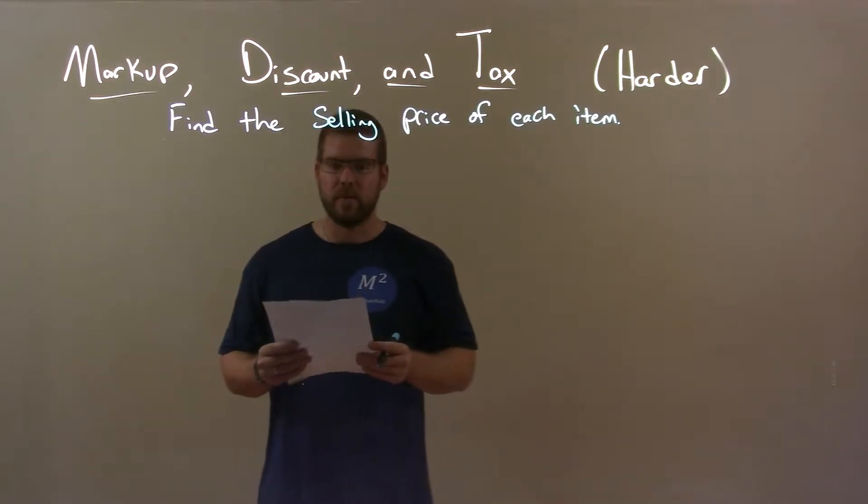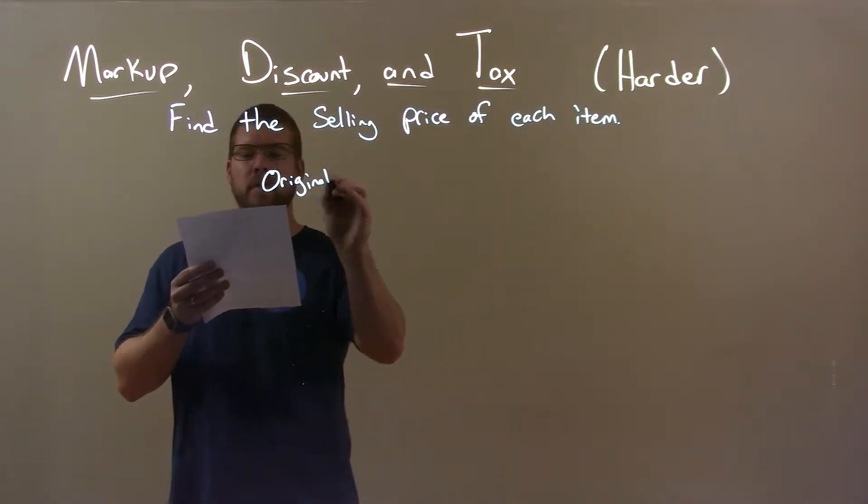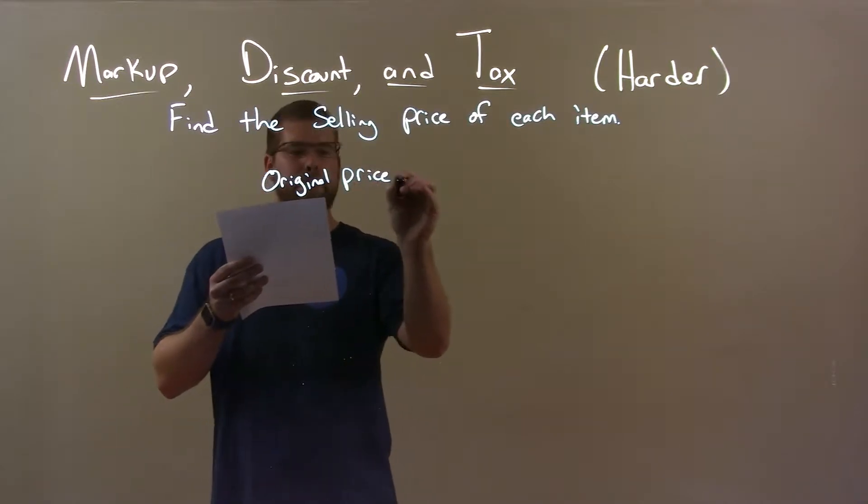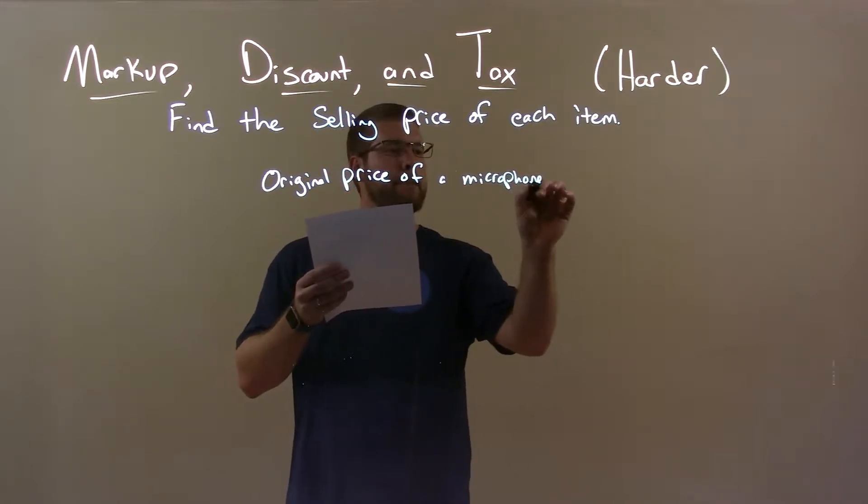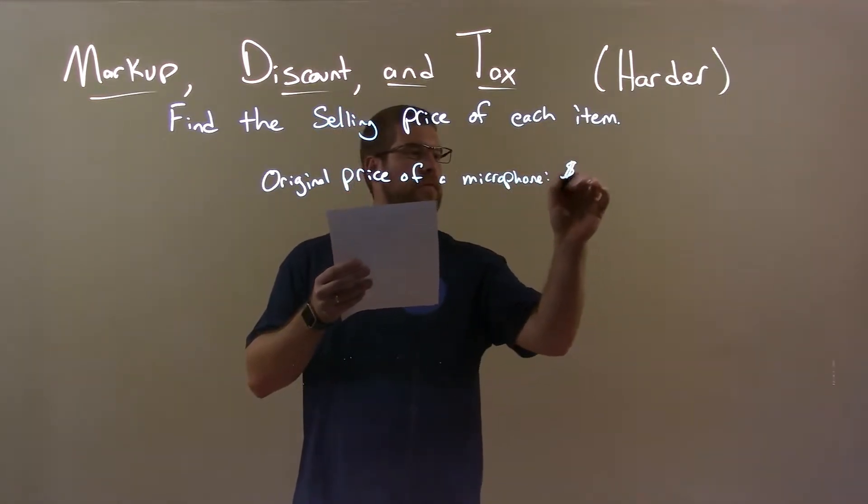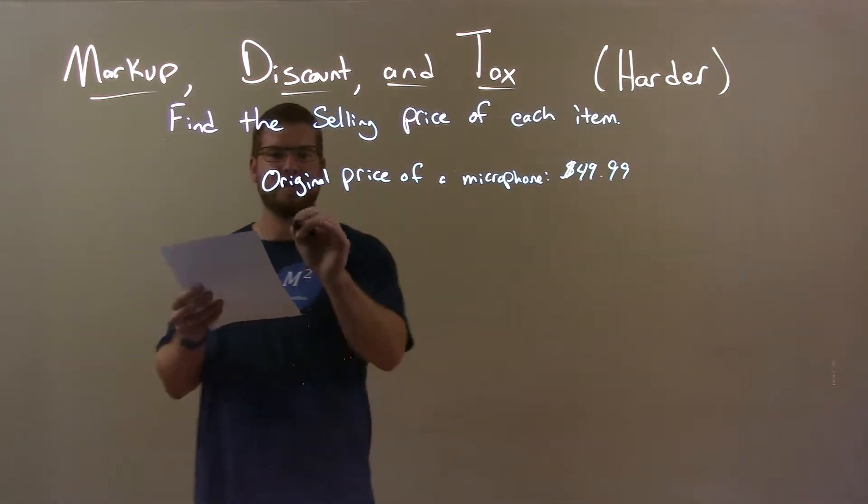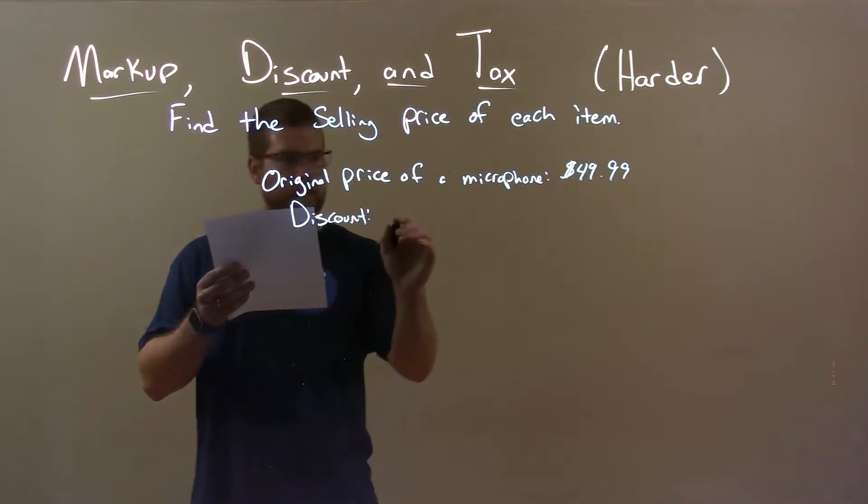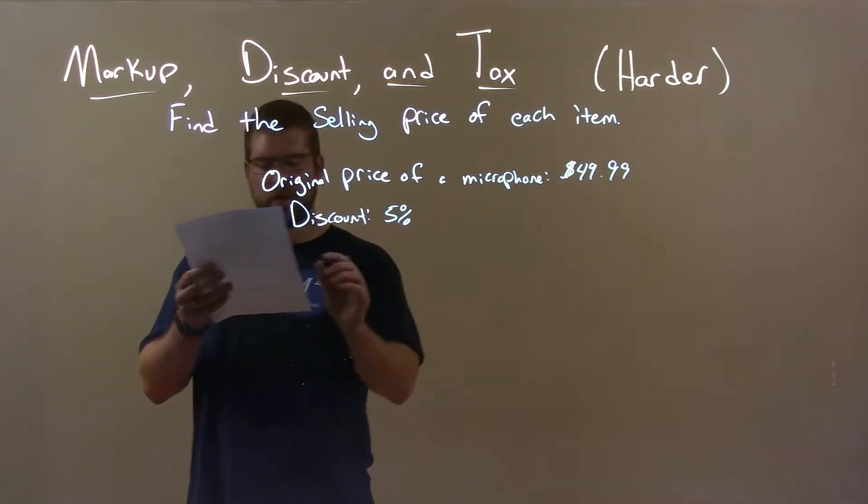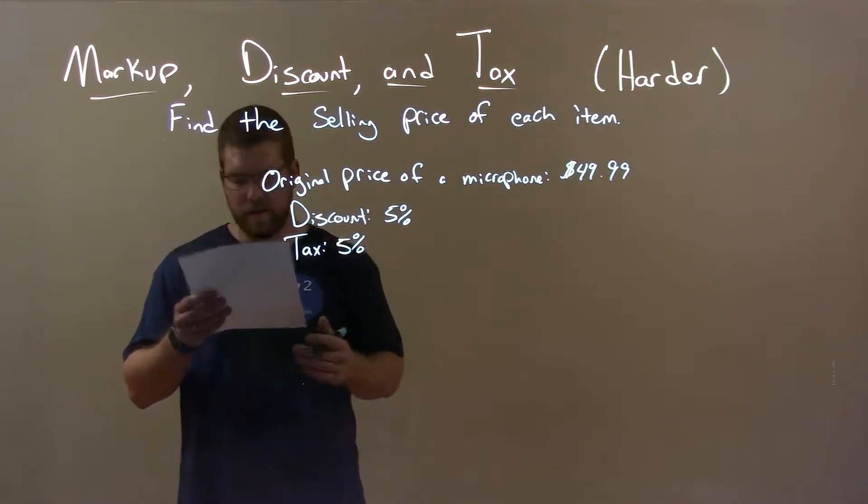If I was given this item, the original price of a microphone is $49.99, the discount is 5%, and we have a tax that's also 5% as well.